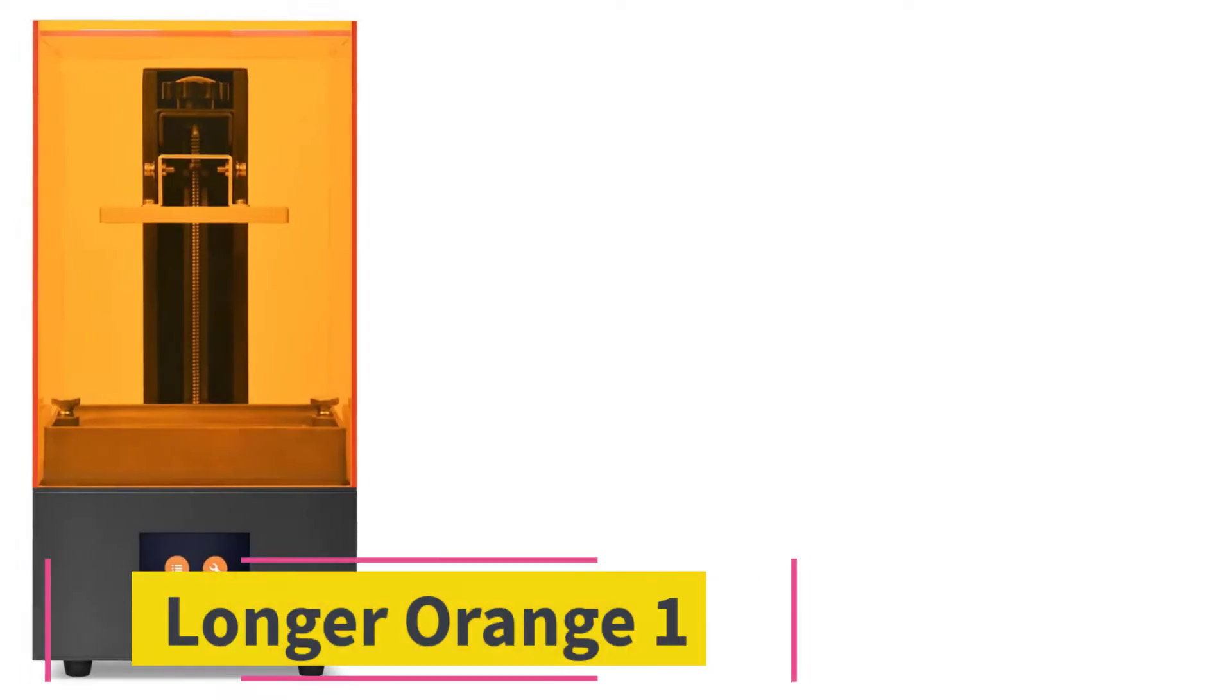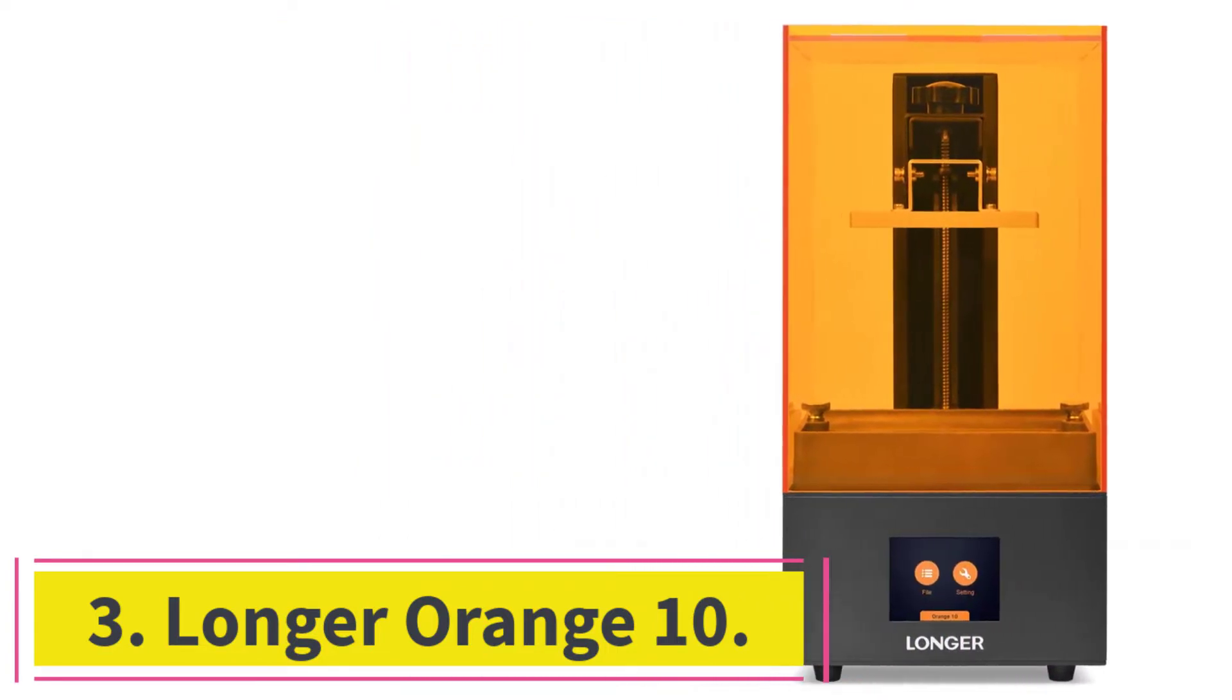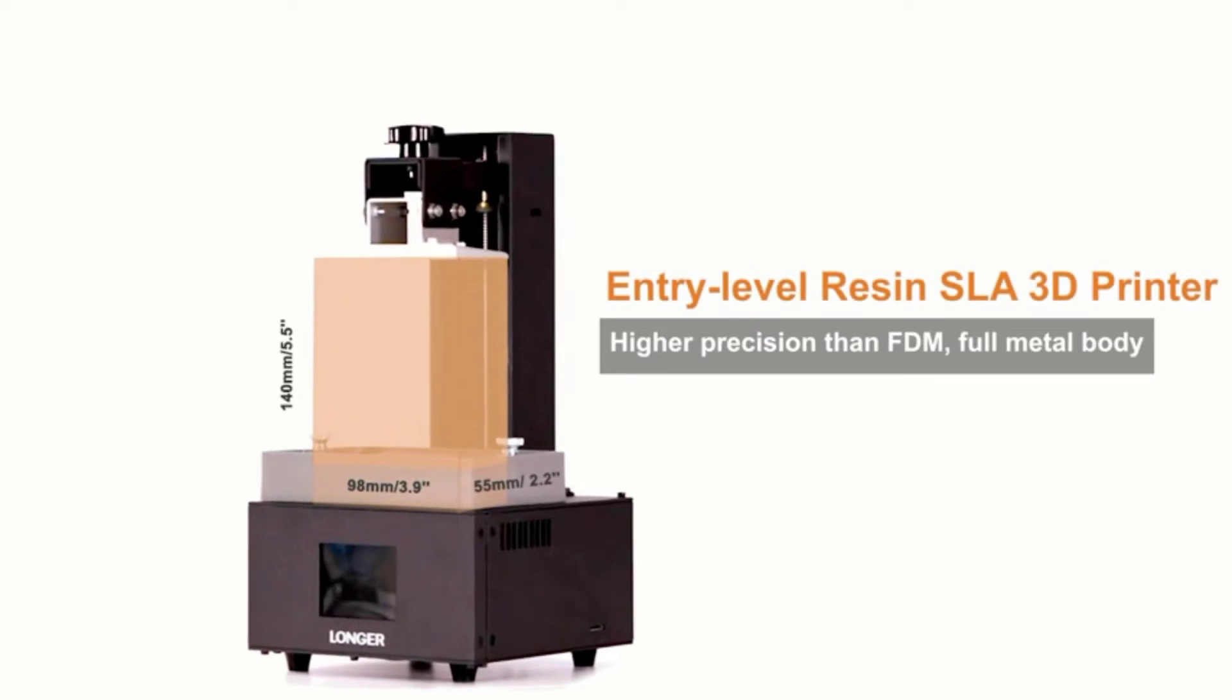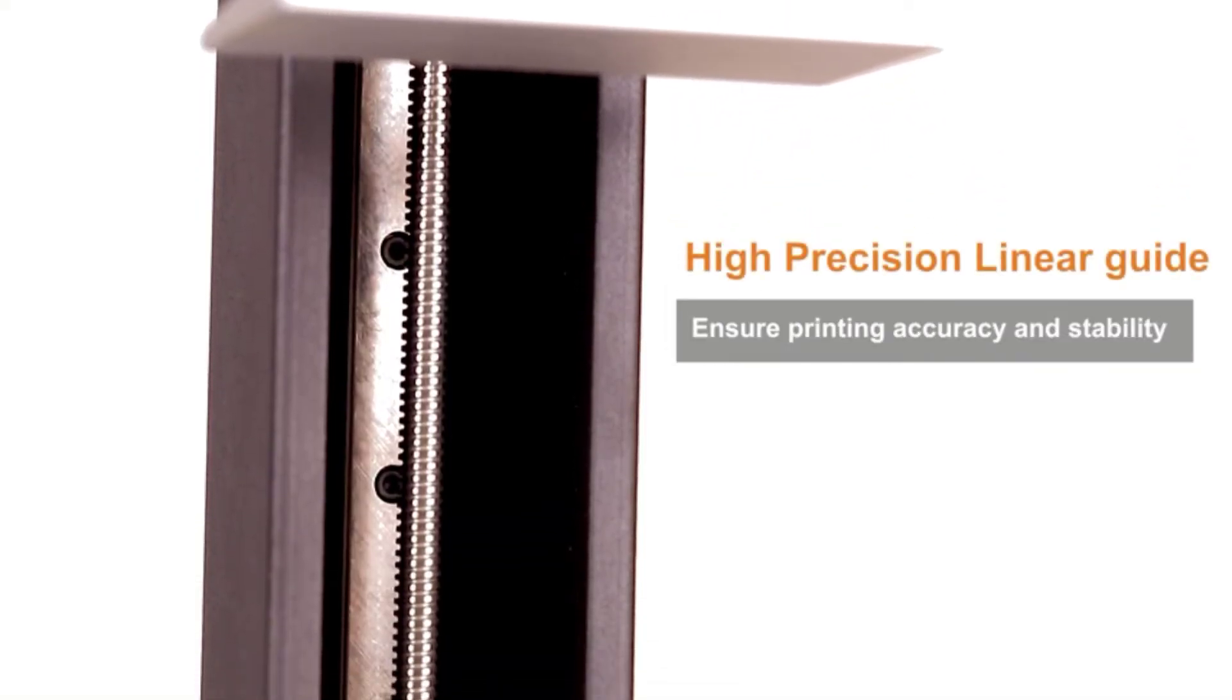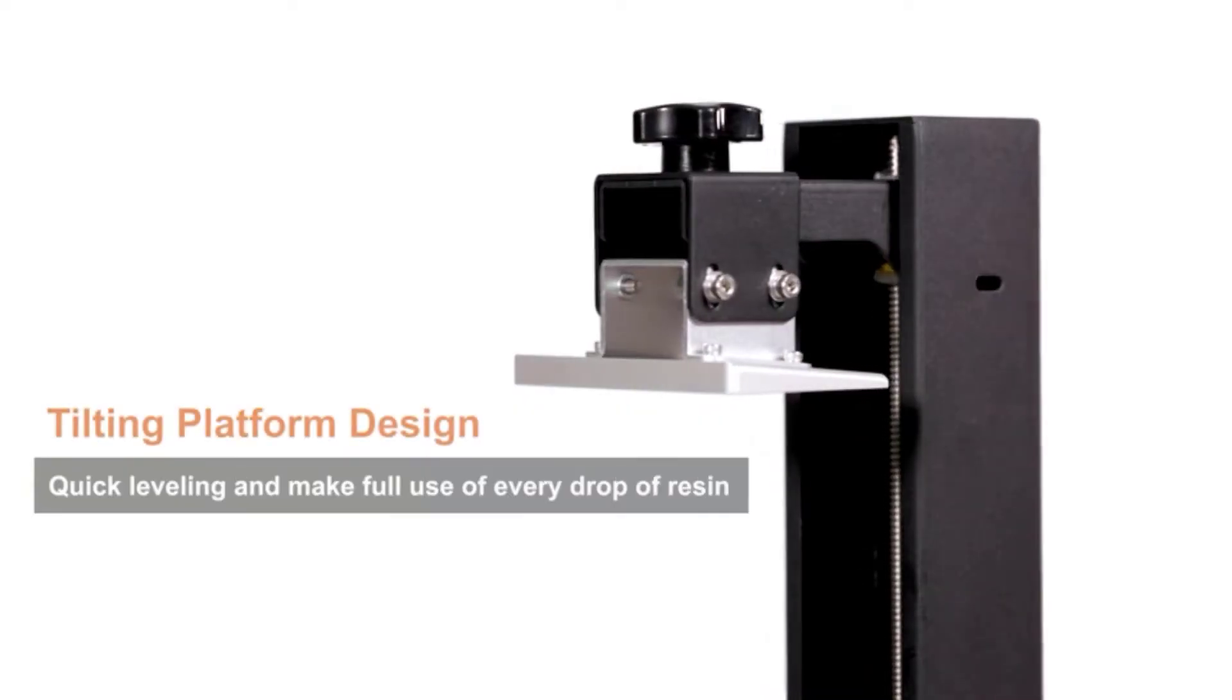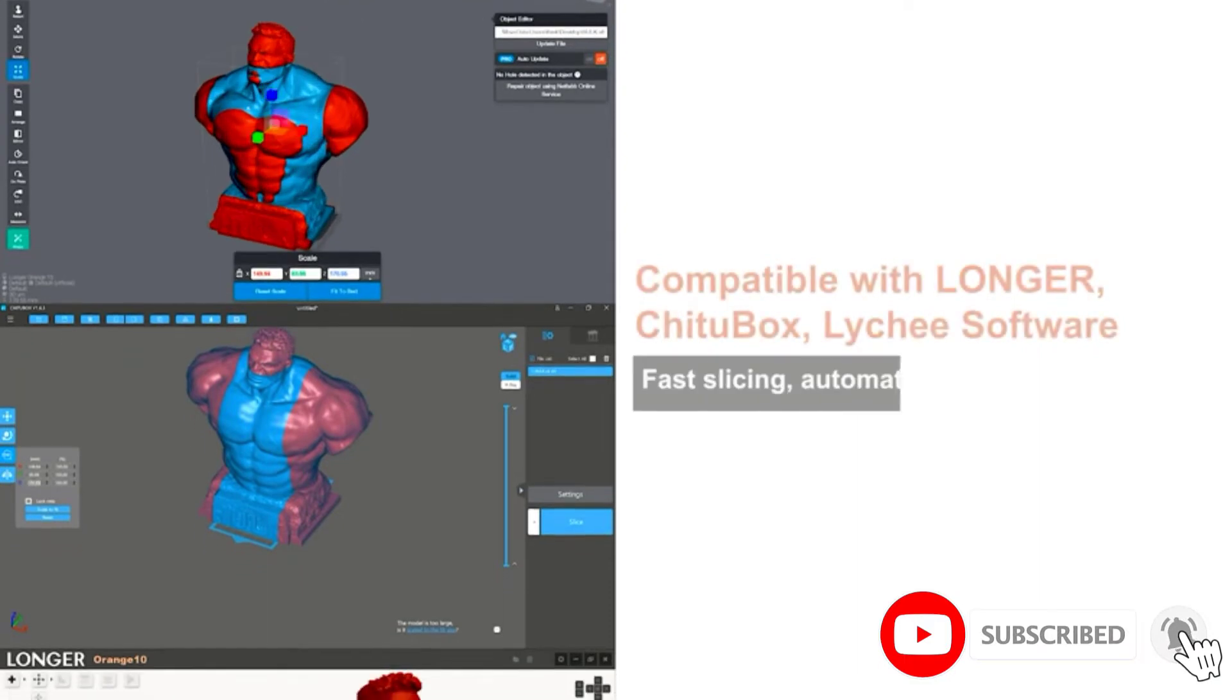At number 3, Longer Orange 10. SLA 3D printers are very efficient in printing jewelry, and the Longer Orange 10 3D printer is one of them. It is an ultraviolet LCD resin 3D printer. Fast proprietary slicer, touchscreen, and smart support generation add to its worth.